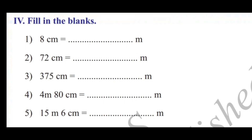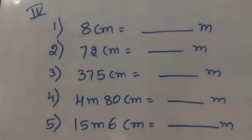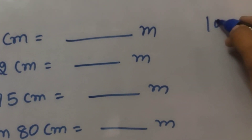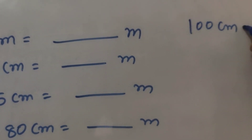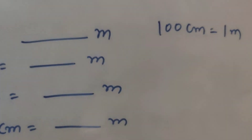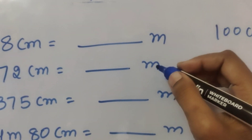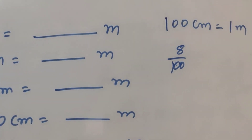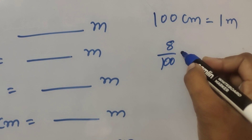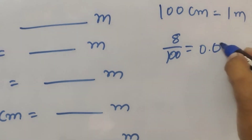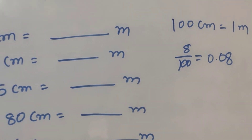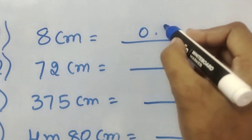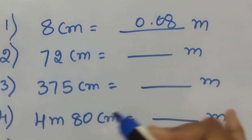Fourth section: Fill in the blanks — centimeters to meters. We know that 100 centimeters equals one meter. So, 8 centimeters = 8 by 100 = 0.08 meters. Seventy-two centimeters = 72 by 100 = 0.72 meters.